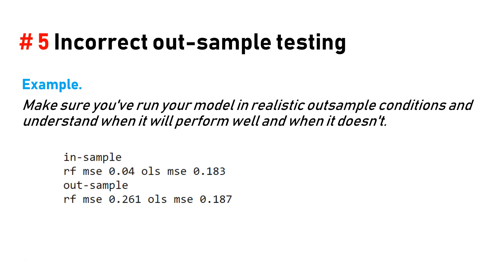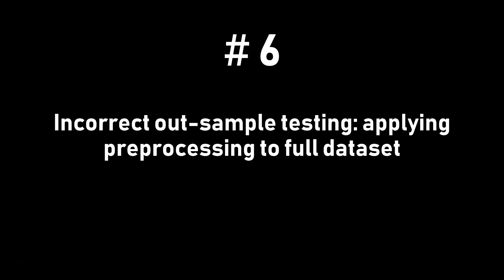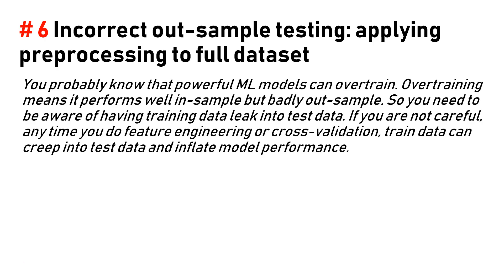Number six: incorrect out-of-sample testing — applying pre-processing to full datasets. Powerful machine learning models can overtrain, meaning they perform well in-sample but badly out-of-sample. You need to be aware of training data leaking into the test set. If you are not careful, any time you do feature engineering or cross-validation, train data can creep into test data and inflate model performance.